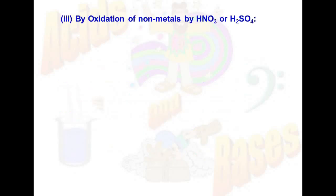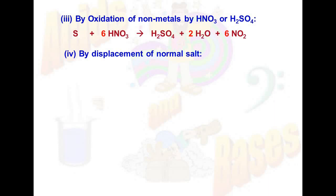Third method: by the oxidation of non-metals by HNO3 or H2SO4. For example, sulfur when reacted with HNO3 gives sulfuric acid, water, and NO2. The next method is by the displacement of normal salt. For example, NaCl when reacted with concentrated sulfuric acid gives NaHSO4 plus HCl.